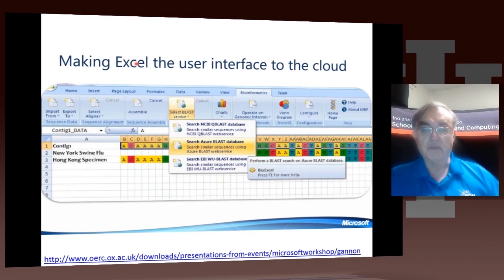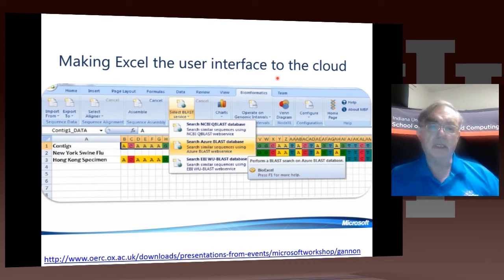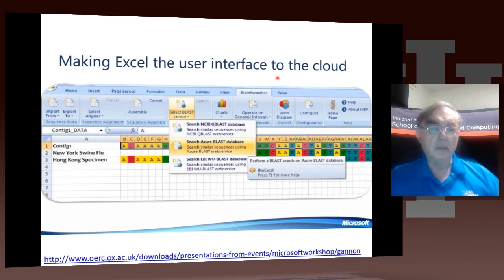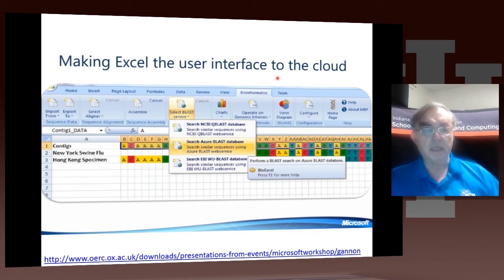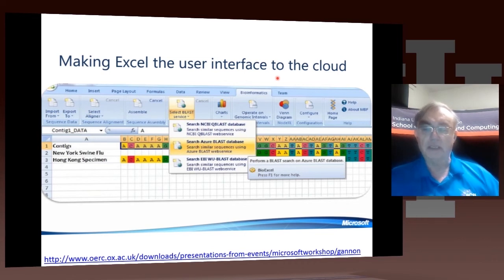This Excel front-end illustrates an idea which is pretty important, which we discussed when talking about cloud architectures — the cloud-bursting idea. You have your job running on your laptop, and the laptop decides this job is too big. You seamlessly jump off into the cloud, keep the same interface, but run the job on the cloud, not on your laptop. When done correctly, this is a very powerful idea, and here it's done for Azure BLAST.